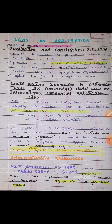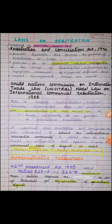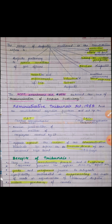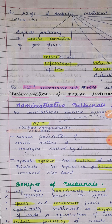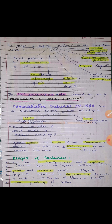Next, administrative tribunals — another form of ADR. The 42nd Amendment Act of 1976 added Articles 323A and 323B to the Constitution, empowering Parliament to set up tribunals for adjudication of specialized disputes. The range of disputes includes: service conditions of government employees, collection and enforcement of tax, industrial and labour disputes, land reforms, election disputes, ceiling on urban property, and procurement and supply of food or essential goods.